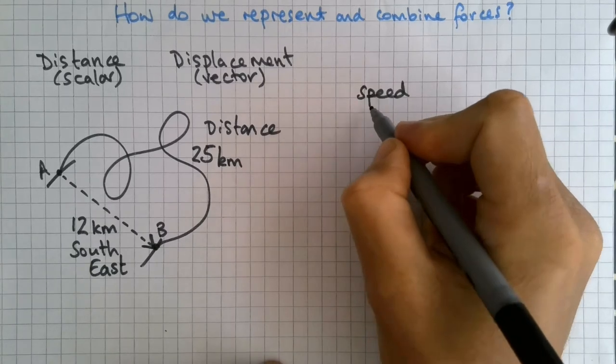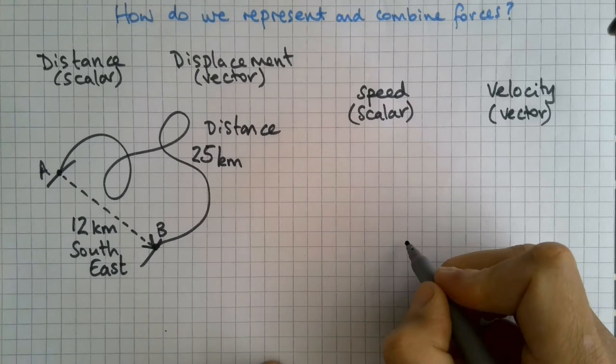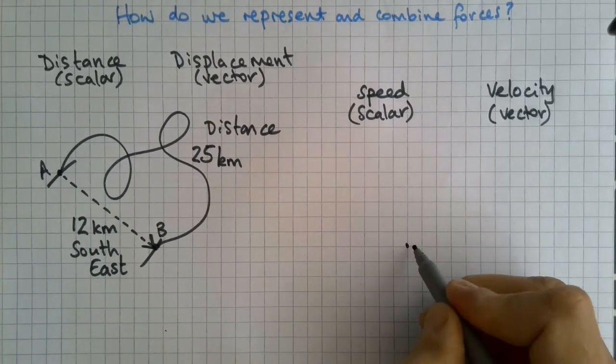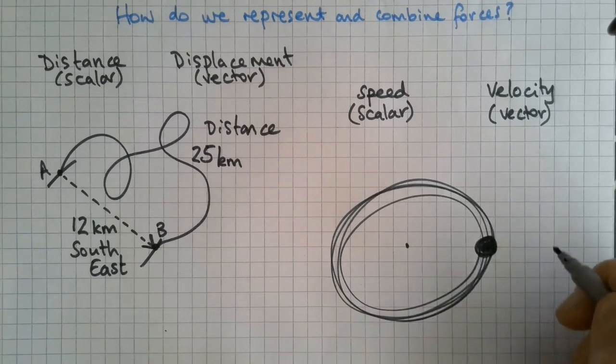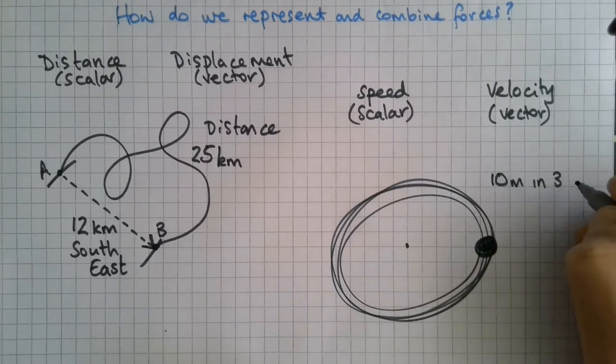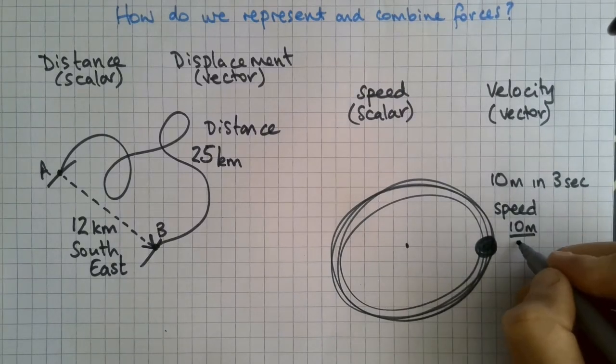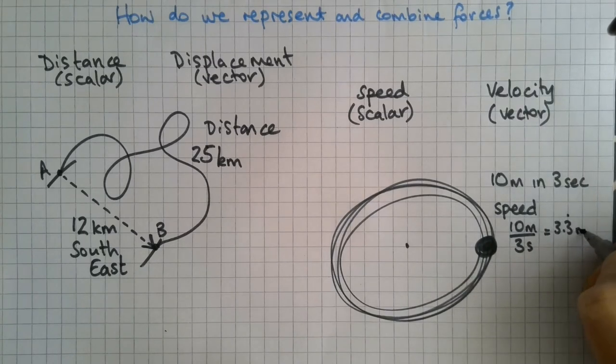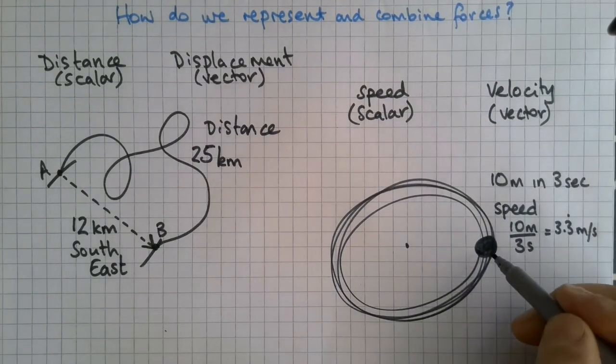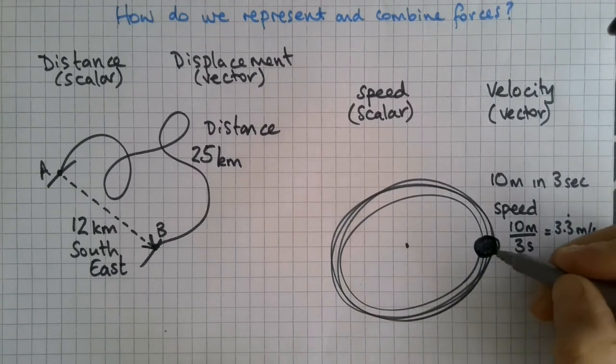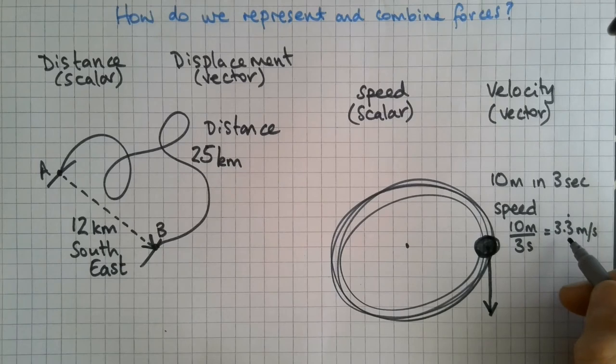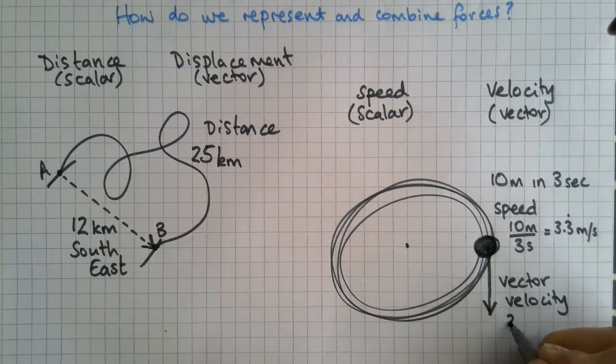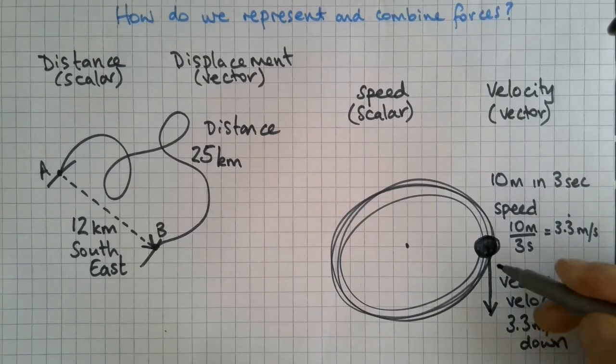Another example is speed, which is a scalar, and velocity, which is a vector. Let's take someone who's whirling around a stone on a bit of string. Let's say that the circumference, so the distance traveled by the stone is 10 meters in 3 seconds. That's going to be a speed of 10 meters in 3 seconds, which is 3.3 meters per second. If we just take this particular instant where the stone is right now, the stone is actually traveling down. It is at 3.3 meters per second, but now I've put a direction, it turns into a vector. So the vector for velocity will be 3.3 meters per second down.